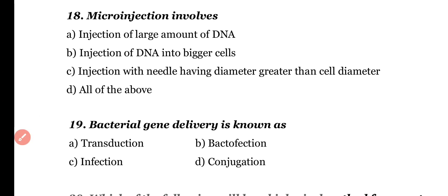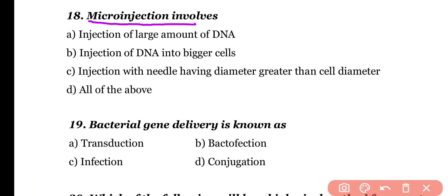Question 18. Micro-injection involves: injection of a large amount of DNA, injection of DNA into bigger cells, injection with needles having diameter greater than the cell diameter, or all of the above. Correct answer is option C. Micro-injection uses needles with a specific diameter for the injection process.